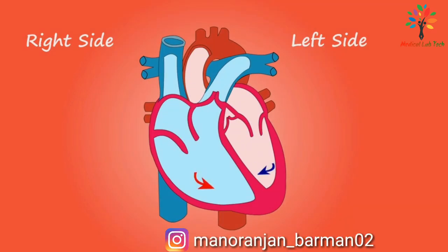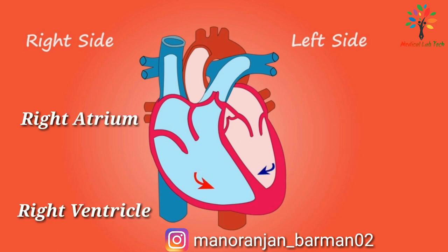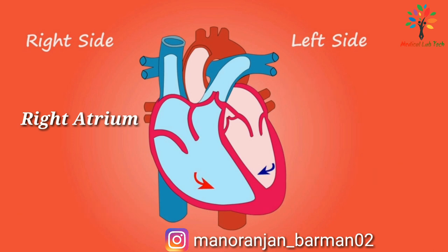The heart is divided into right and left sides by a septum consisting of myocardium covered by endocardium. The heart has four chambers. On the right side, there is the right atrium above and the right ventricle below. On the left side, there is the left atrium above and the left ventricle below.